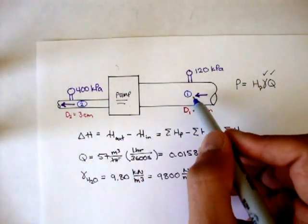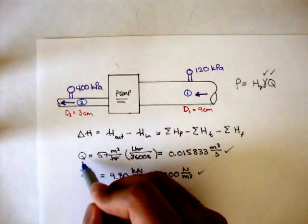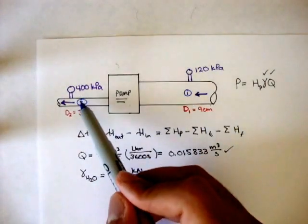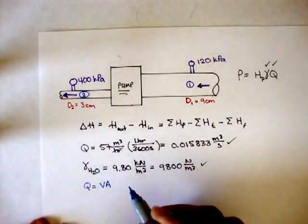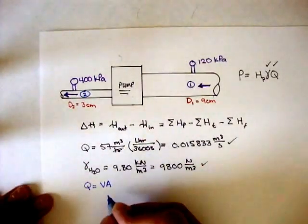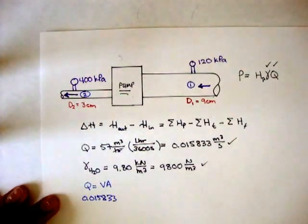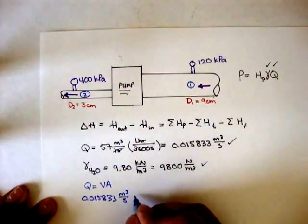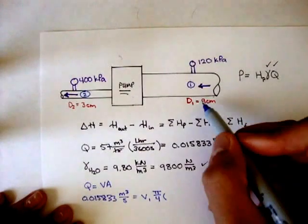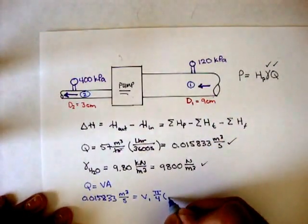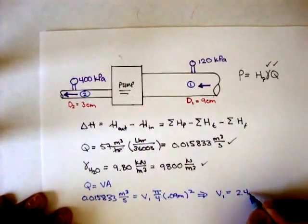And right now we don't have any of the velocities. We don't have the velocity at 1, we don't have the velocity at 2, but we do have the volumetric flow rate. And remember, using continuity, the volumetric flow rate here is going to be equal to the volumetric flow rate here. So we can find velocity of 1 and velocity of 2 using Q equals VA. So for velocity 1, we can say Q, which is 0.015833 meters cubed per second is equal to V1 times A1. So the area of 1, which is a tube, so it's going to be pi over 4 times the diameter squared, and we want to change centimeters to meters, so that's 0.09 meters squared. And we find out that the velocity at 1 is about 2.49 meters per second.